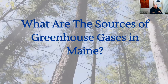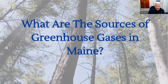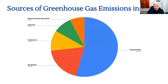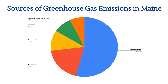I thought it'd be interesting to talk about what the sources of greenhouse gases are in Maine, since each state is a little different. When people think of greenhouse gas emissions they probably think of heavy industry, but here's the actual chart for Maine. By far the biggest source of emissions is the transportation sector — people getting from here to there in motorized vehicles — and it's more than 50% of all emissions in Maine. The second biggest is residential: home heating, electricity, and similar uses.